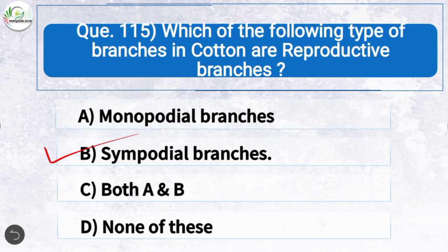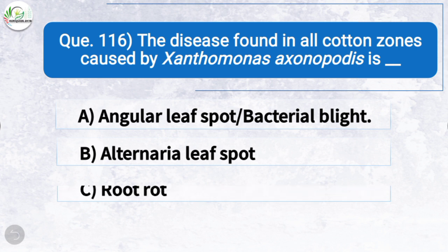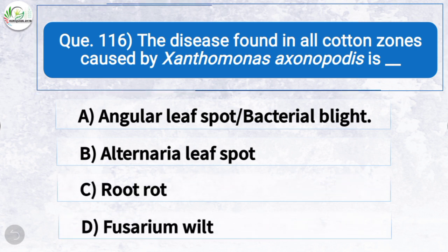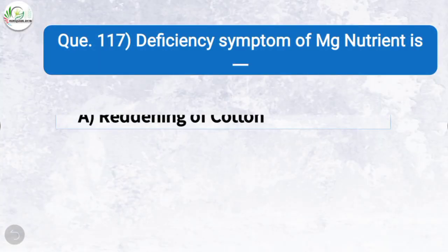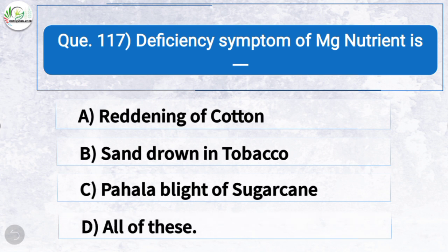Question one hundred and fourteen: Oviposition of cotton leaf hoppers (jassids) takes place — the correct answer is option D: inside leaf veins. Question one hundred and fifteen: Which type of branches in cotton are reproductive branches? The correct answer is option B: sympodial branches. Question one hundred and sixteen: The disease found in all cotton zones caused by Xanthomonas axonopodis is — the correct answer is option A: angular leaf spot or bacterial blight. Question one hundred and seventeen: Deficiency symptom of magnesium nutrient shows — the correct answer is option D: all of these — reddening of cotton, sand drawn in tobacco, and pahala blight of sugarcane.